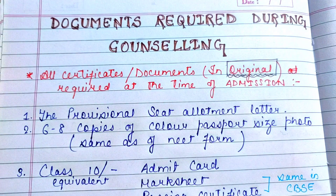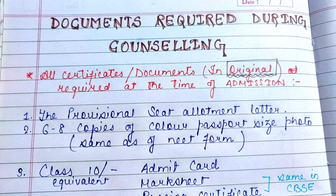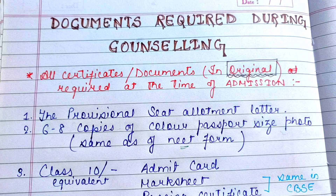The first document is the seat allotment letter — whether it is for MBBS, BDS, Ayurveda, or Homeopathy, the allotment letter is very important. Along with that, you need to bring 6 to 8 copies of your passport size photographs, and all photos should be in colour.